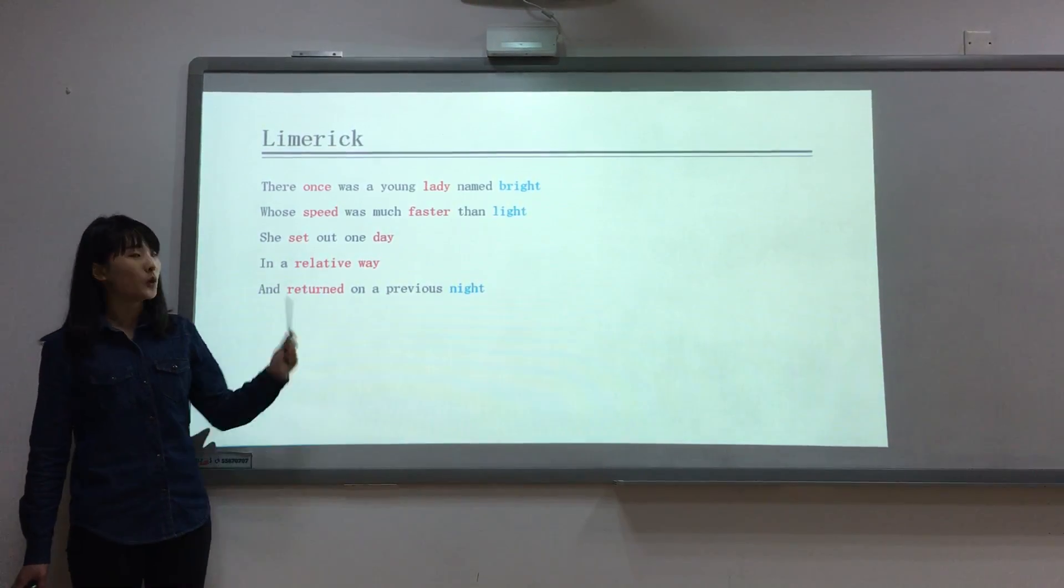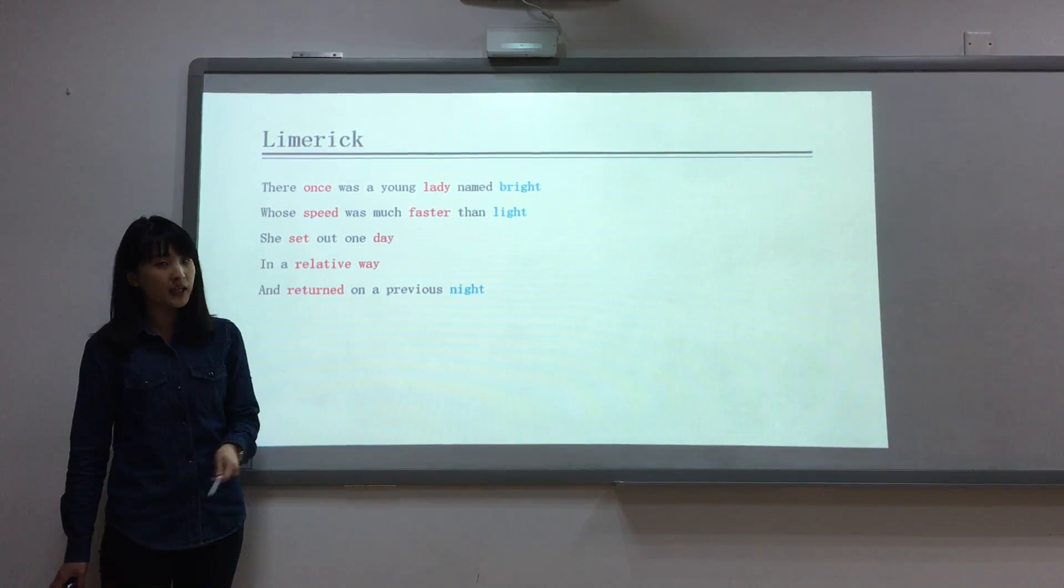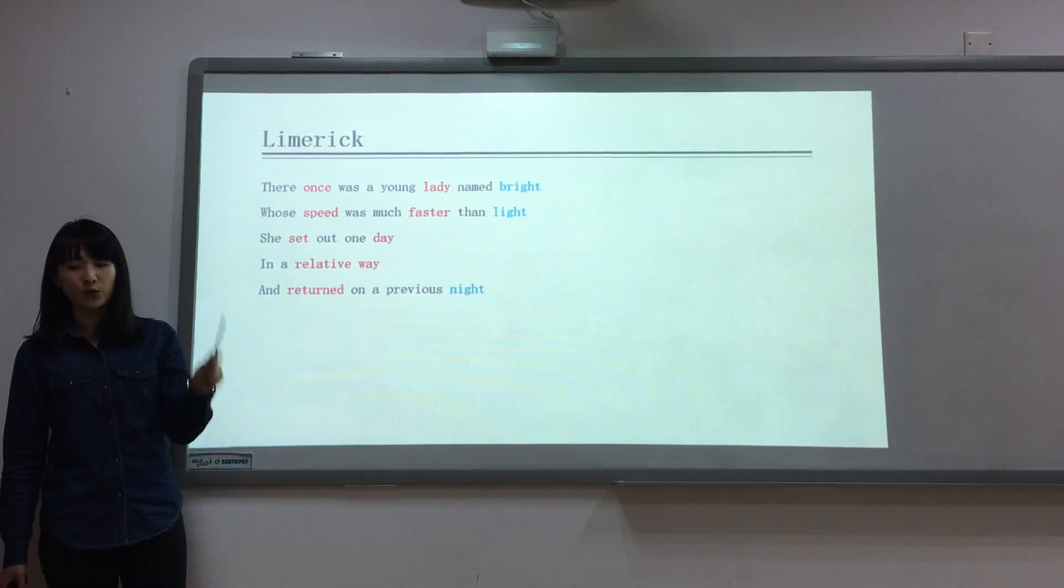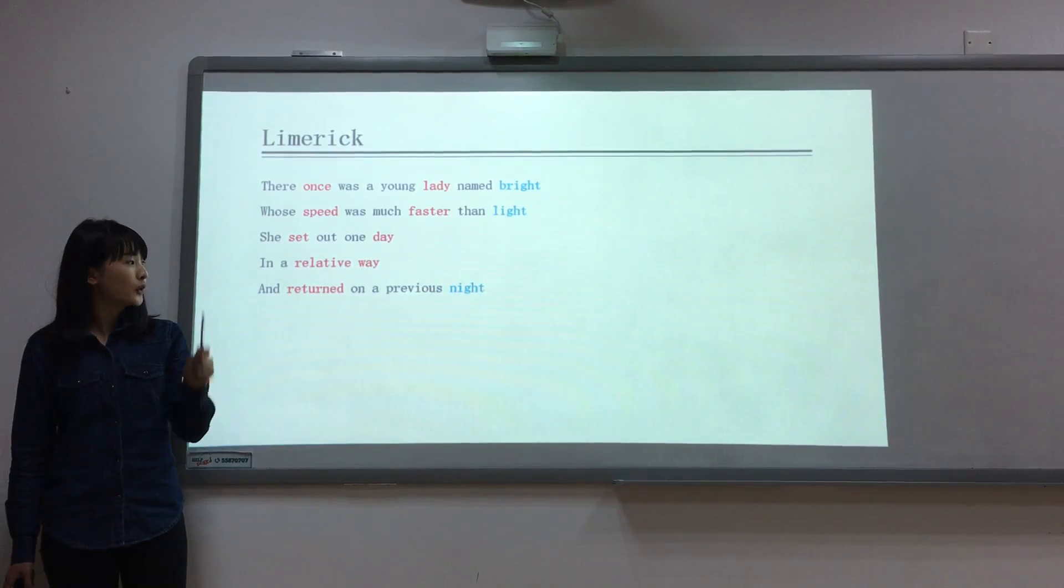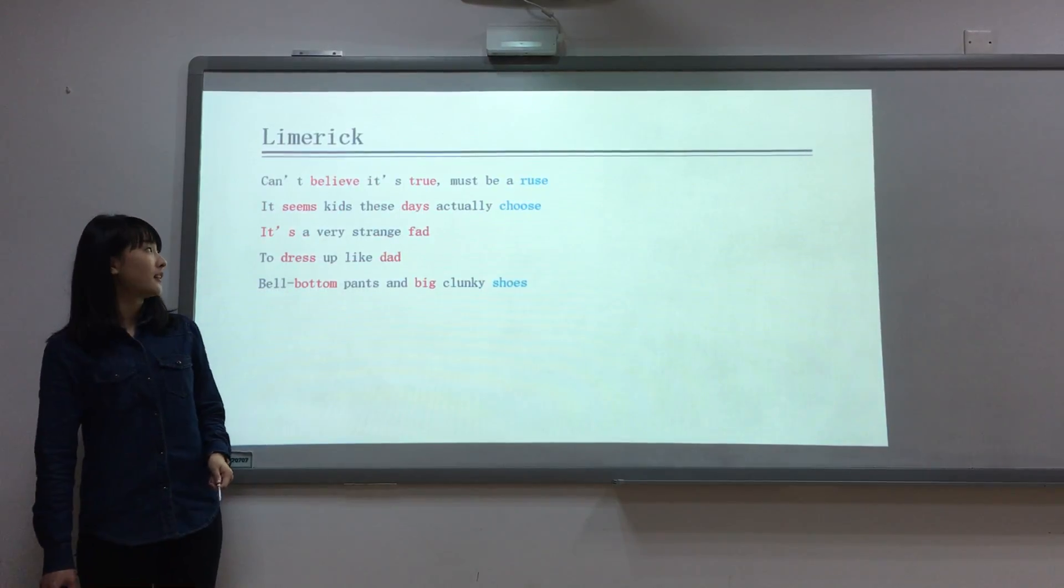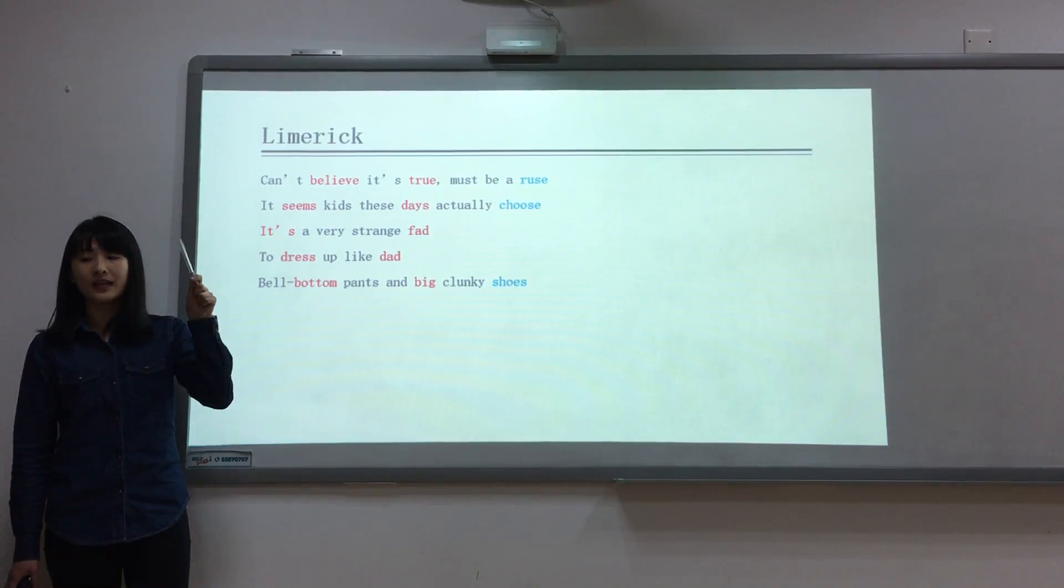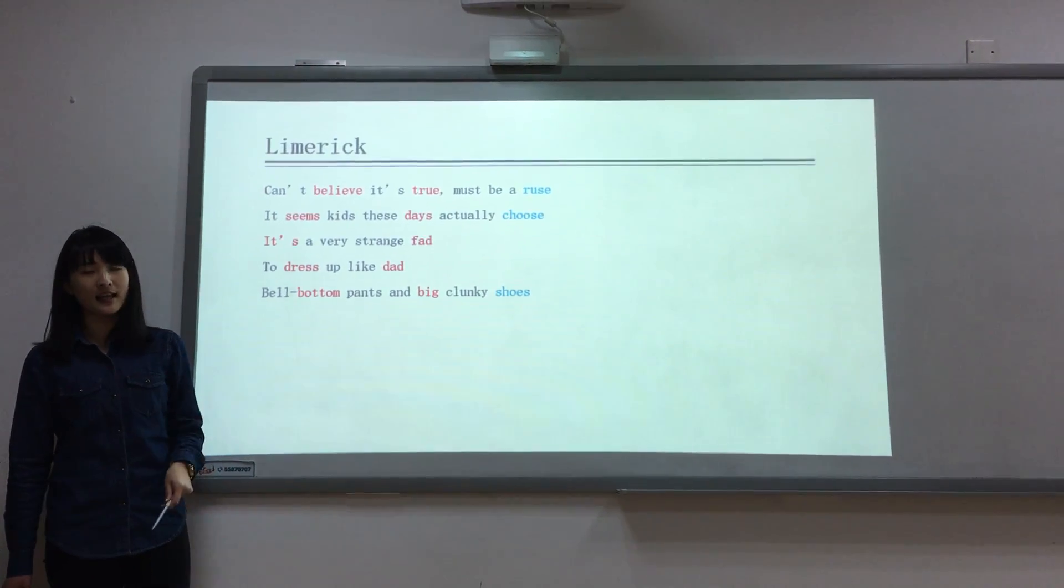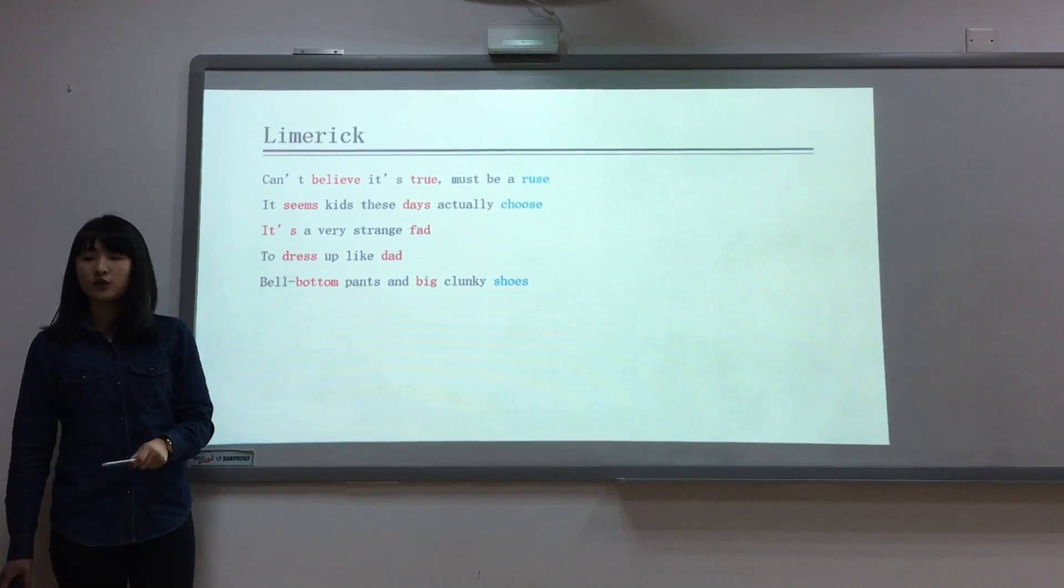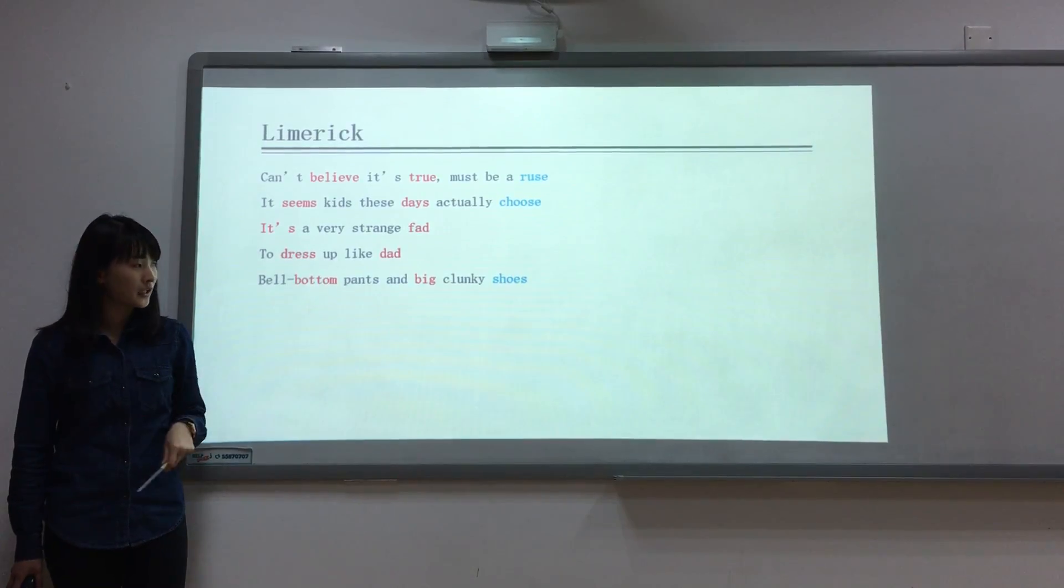So let's try together to read these two limericks. The first: 'There once was a young lady named Wright, whose speed was much faster than light. She set out one day in a relative way and returned on a previous night.' The second one: 'Can't beat the shoes, must be a ruse. It seems kids these days actually choose. It's a very strange fact to dress up like dad, bell-bottom pants and big clunky shoes.'